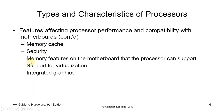Memory features on the motherboard that the processor can support are determined by the chipset. The chipset determines the main characteristics of the motherboard: what processor it supports, what RAM types it can use, and what bus types and speeds it supports — including standards such as AGP (Accelerated Graphics Port) and USB (Universal Serial Bus). Chipsets are so named because they comprise two relatively large chips with all functions on one physical chip.